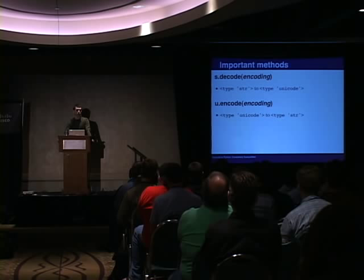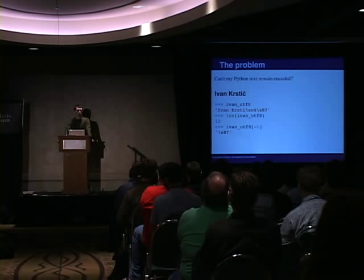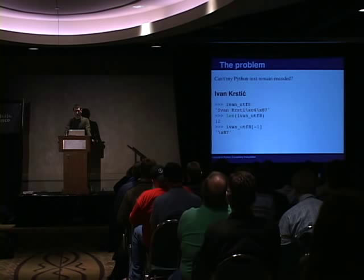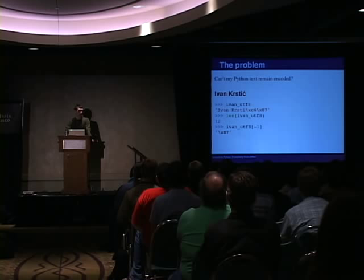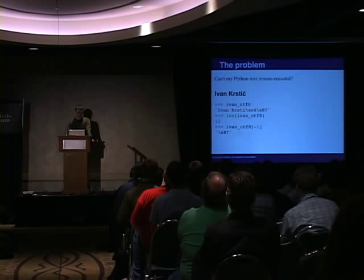Does this seem like a problem? We read into this file and we got a byte string. If we take the length of it, it tells us 12. If you count that up, it's actually 11. And if we take a slice of the last character, we get 0x87. But as I said earlier, the C with a hatchet takes up two bytes. So that doesn't seem like what we want, because other encodings can use a different number of bytes.